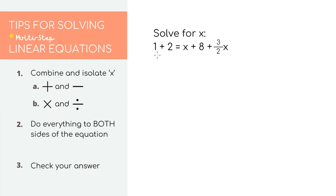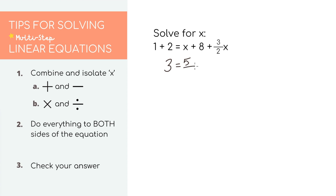For the last equation in this section, we have 1 plus 2 equals x plus 8 plus 3 over 2x. The first thing we want to do is combine like terms so it looks less threatening. On the left, we can combine: 1 plus 2 equals 3. On the right, we have two x values, so we can combine those also. x plus 3 over 2x equals 5 over 2x. So on the right side we'll have 5 over 2x plus 8. Now we're just left with another two-step linear equation.